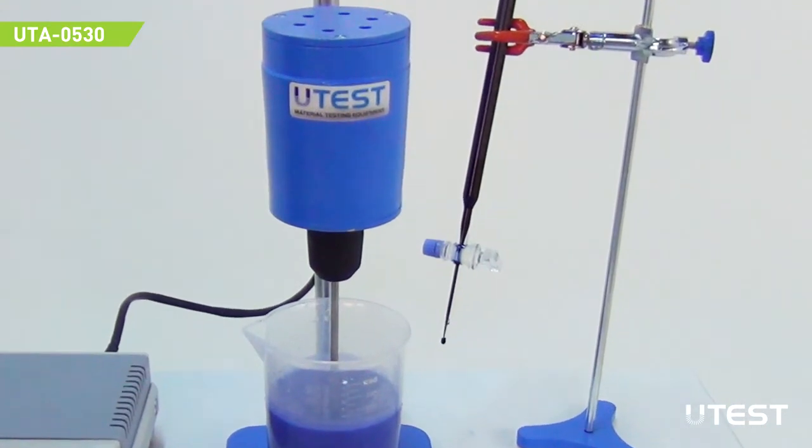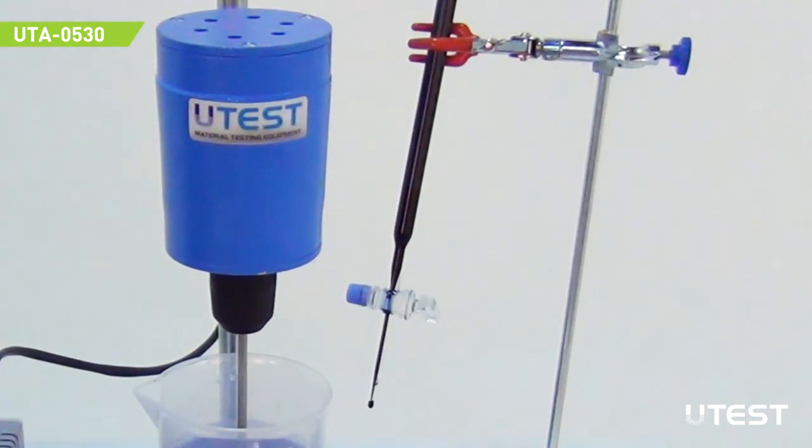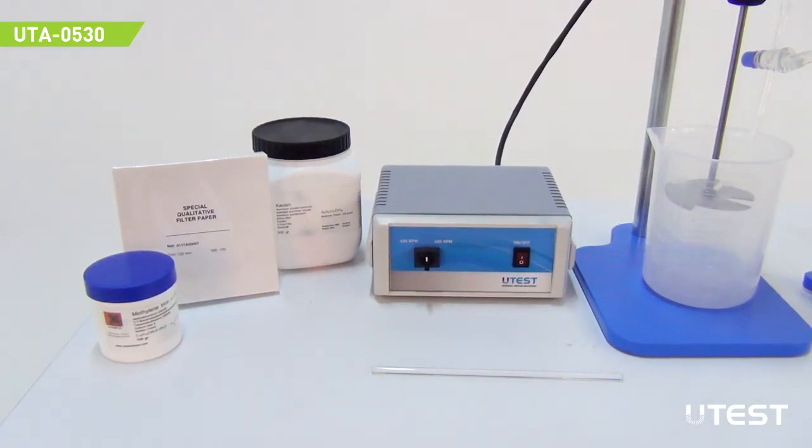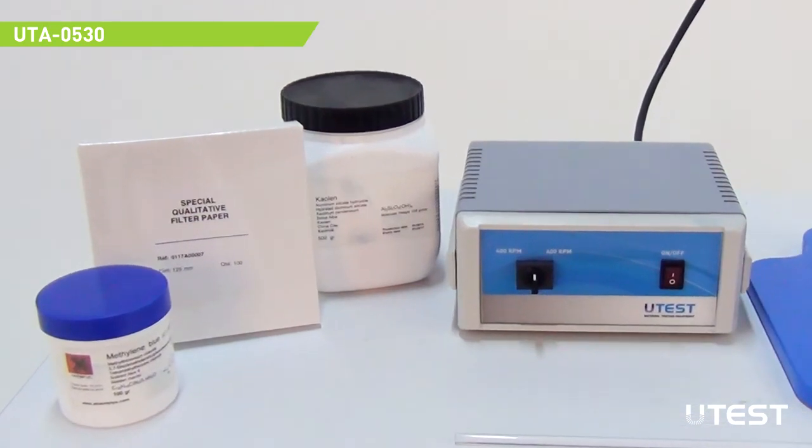Measure the volume of the solution that has been used and calculate the methylene blue rate. If the aggregate used in the experiment contains fine particles in small quantities, kaolin addition may be required.